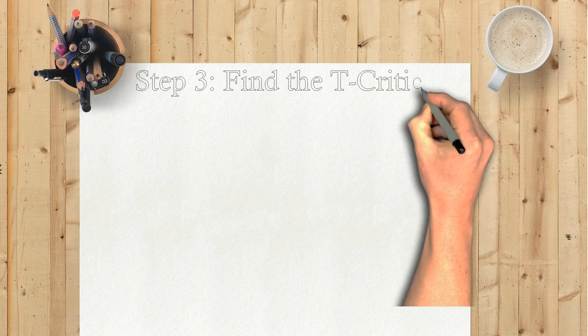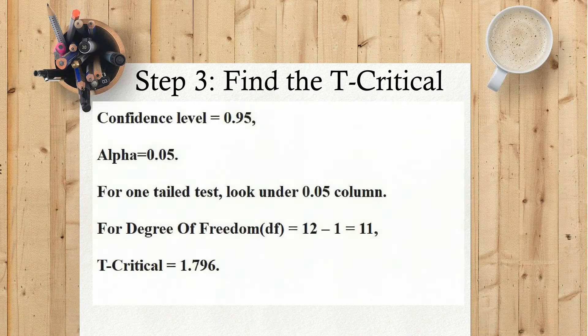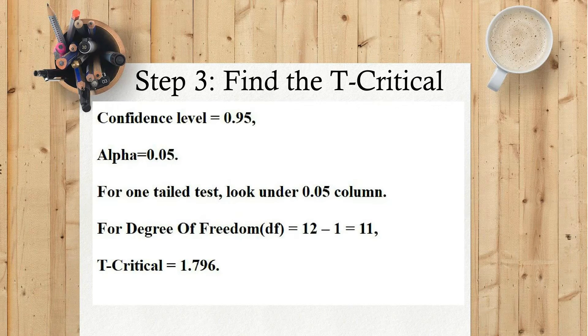Step 3: Find the t-critical. Confidence level equals 0.95, α equals 0.05. For one tailed test, look under 0.05 column. For degree of freedom df equals 12 minus 1 equals 11, t-critical equals 1.796.